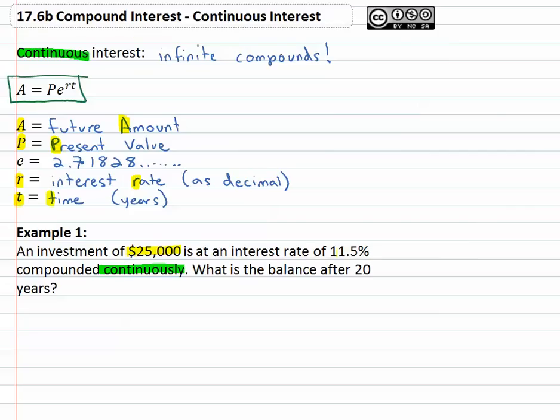Well we've got 25,000, eleven percent and twenty years. And I told you I'm going to give you the formula A equals PE to the RT. Well the 25,000 that's the principal starting present value. Eleven point five is the interest rate as a decimal is point one one five, and the twenty years is the time.